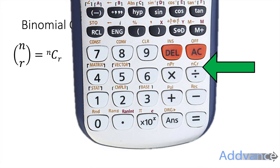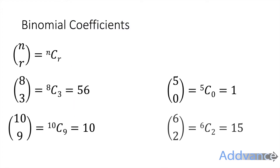Shift and then the divide button will give you the binomial coefficients. For example: 8C3 = 56, 10C9 = 10, 5C0 = 1, and 6C2 = 15. Try to get those on your calculator before we continue, so you definitely know how to find these.